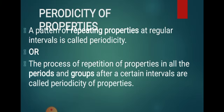The process of repetition of properties in all the periods and groups after certain intervals is called periodicity of properties. For example, if the tenth element comes, it will have the same properties as the second one. This pattern is called repetition, and so it is called periodicity of properties.